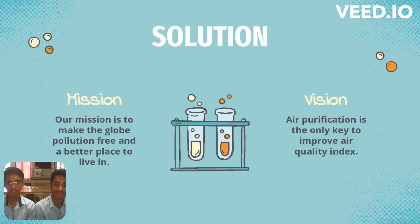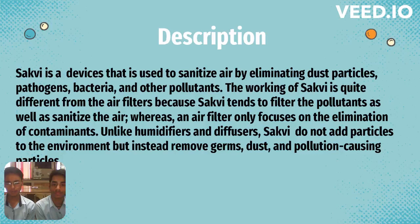So what is the solution? Our mission and task is to create a solution for the major problem of air pollution. Our vision is to improve the Air Quality Index. So what have we made? We have made the SAKUID. SAKUID is a device used to sanitize air by eliminating dust particles, pathogens, bacteria, and other pollutants. The working of SAKUID is quite different from other air filters because it tends to both filter the pollutants and sanitize the air.